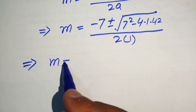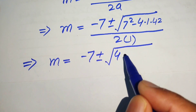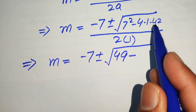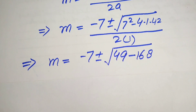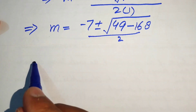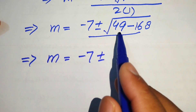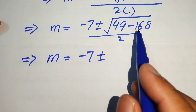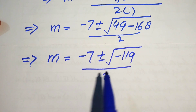Simplifying inside the square root: 7² = 49 and 4 × 42 = 168, so we have m = (−7 ± √(49 − 168)) / 2 = (−7 ± √(−119)) / 2.